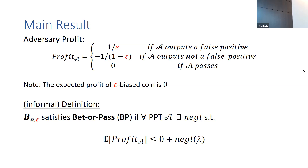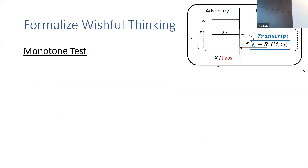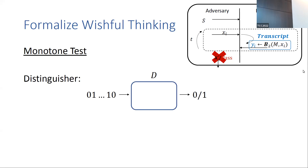Recalling our wishful thinking — that a robust bloom filter should behave like a truly unpredictable biased coin — this has a sequential nature. The two notions we saw so far consider a one-time challenge, so it's not clear yet how they relate to wishful thinking. To find the connection, we introduce a new test: the Monotone Test. We are not interested in any output but only consider the responses of the bloom filter on adaptive queries, called the transcript. We allow the adversary to repeat queries, though repeated queries are not counted — we're only interested in fresh false positive elements.